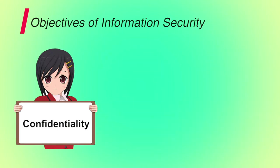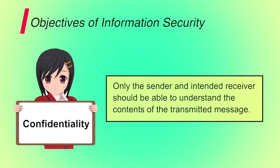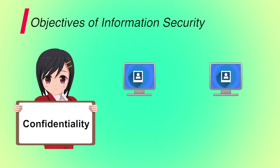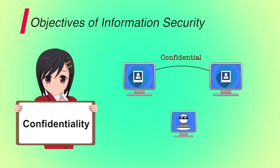First is confidentiality. It means to control or restrict access of critical or sensitive information to an individual. Loss of confidentiality is the unauthorized disclosure of information. For example, if you are sending your picture to your friend, then it should be confidential between you and your friend. If any other person is doing eavesdropping during your and your friend's communication, then it breaks the confidentiality of the message.